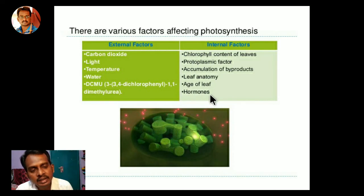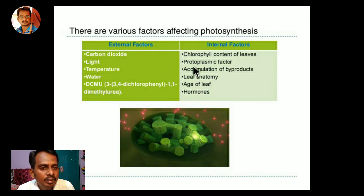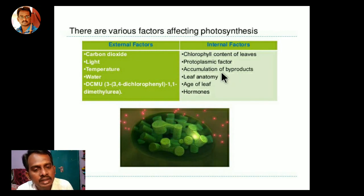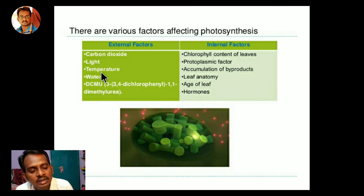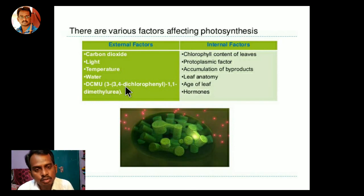To summarize: the internal factors given in your textbook are pigment content, leaf age, accumulation of carbohydrate or byproducts (excess carbohydrates affect the photosynthetic process), and hormones. The external factors are light (a major source), carbon dioxide, temperature, water, and minerals and elements present in water sources. These are the factors that affect the photosynthetic process.